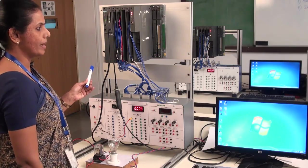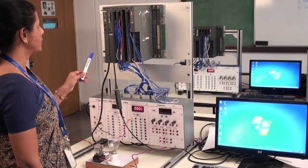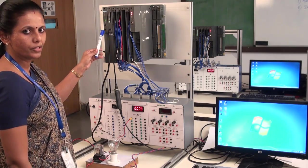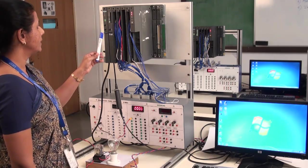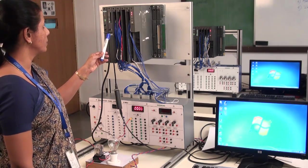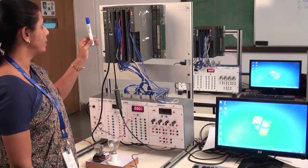This is the S7-400 station, in which we have first module which is the power supply module. Then there is the CPU, central processing unit. This is the CPU 412-2DP.